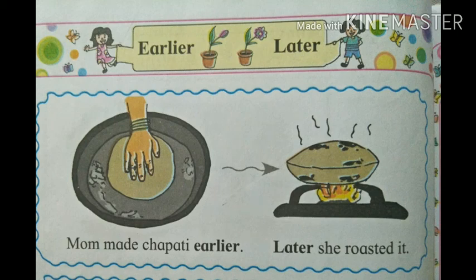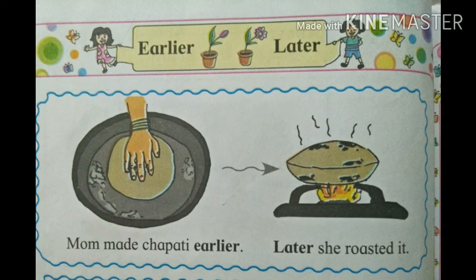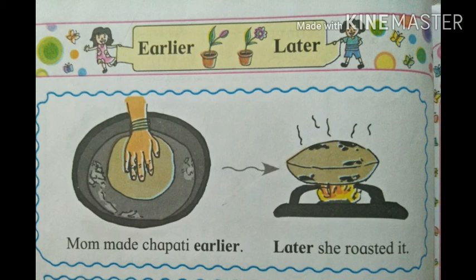In this picture, you can see the topic name of earlier and later. Now, in the first picture, you can see mom made chapati earlier. And in the next picture, you can see later she roasted it. It means first of all, your mom made chapati on the roller pot and then your mom roasted the chapati on the gas. So, the first thing which we have done is earlier, and after that, what happened is called later.